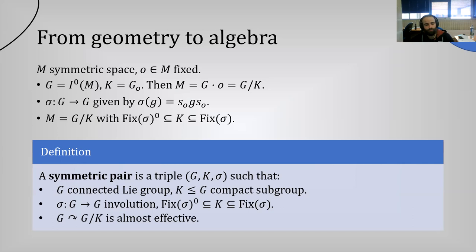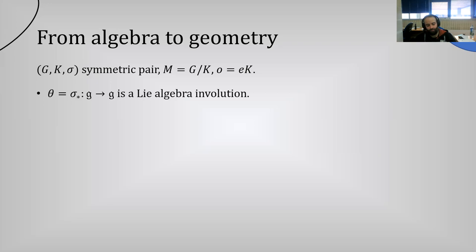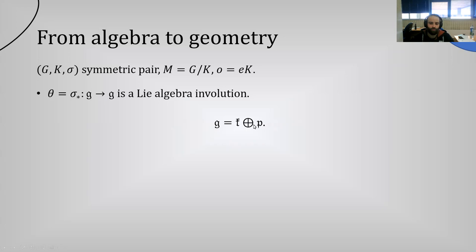The natural question is whether a symmetric pair determines a symmetric space, and the answer is affirmative. Starting from a symmetric pair, we construct the homogeneous manifold G mod K and fix the coset of the identity as the origin. Since sigma is a Lie group involution, its derivative theta is a Lie algebra involution. This linear map has square equal to one, so from linear algebra there is a decomposition of the Lie algebra g as the sum of the eigenspaces of theta with eigenvalues +1 and -1. We can write this as g = k + p, where k is the isotropy algebra and p is a vector subspace.